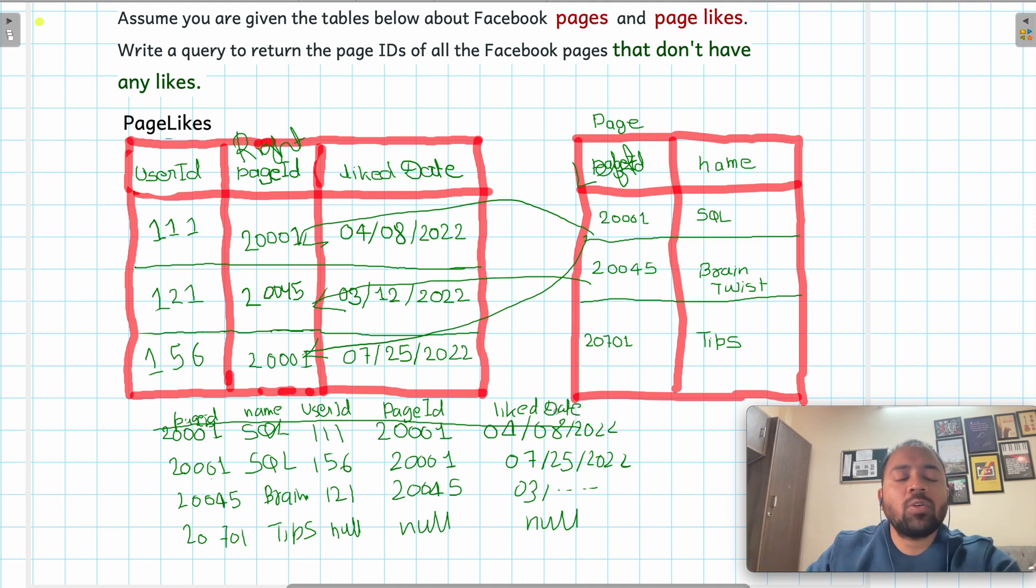Okay, what is our question? Our question is: assume you are given tables below about Facebook pages and page_likes. Write a query to return the page_id of all the Facebook pages that don't have any likes. It's simple. Now we will do the left join and we will figure out all those records where after doing the join, like_date is null.